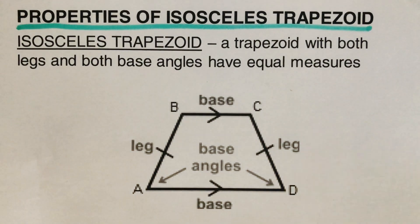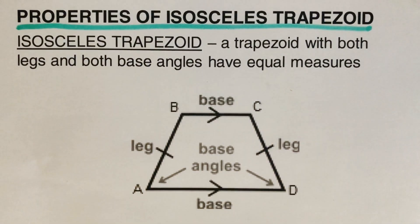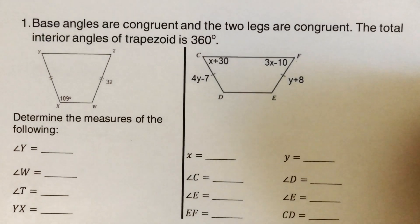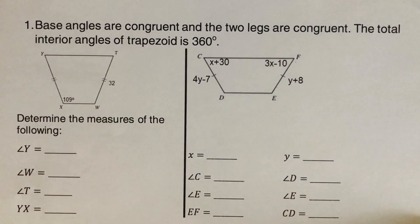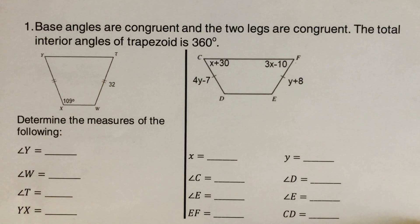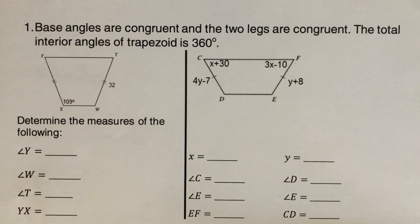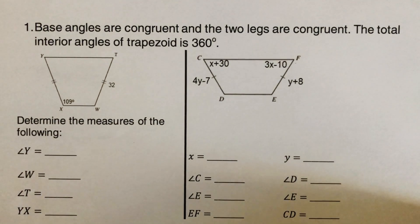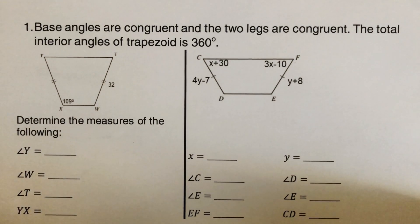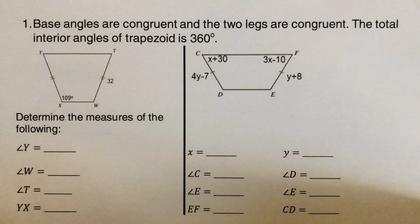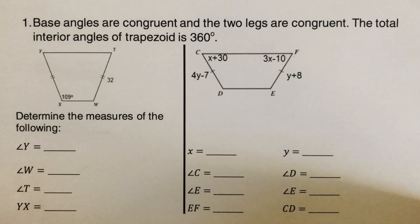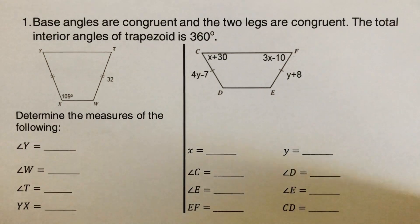Now let's go over the properties of an isosceles trapezoid. The first property states that the base angles are congruent and the two legs are congruent. Also, the total interior angles of a trapezoid or isosceles trapezoid is 360 degrees.